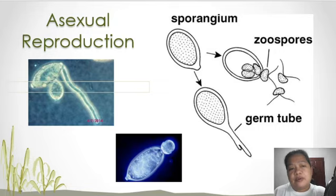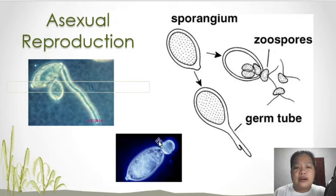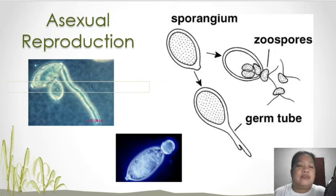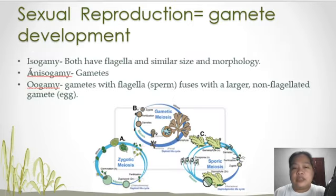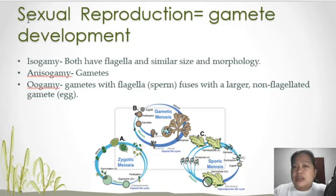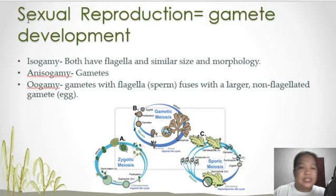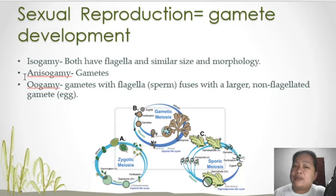Some algae may also produce asexual reproduction where a small portion of the cell is removed — a part of algae buds off and develops into a new individual. In gamete development, we have gametic meiosis, zygotic meiosis, and sporic meiosis. The sexual fusion could either be isogamy, anisogamy, or oogamy.